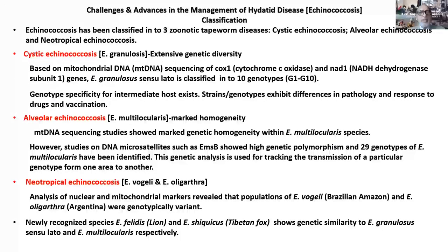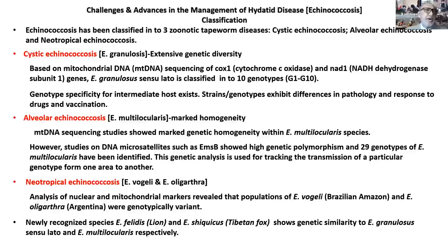Echinococcus has been classified into three main forms: cystic echinococcus, alveolar echinococcus, and neotropical — also called polycystic or neotropical echinococcus — which is extremely rare.